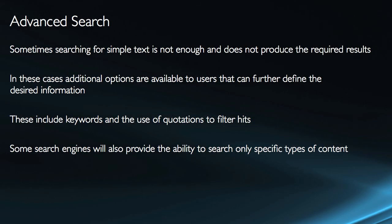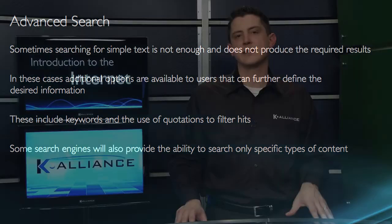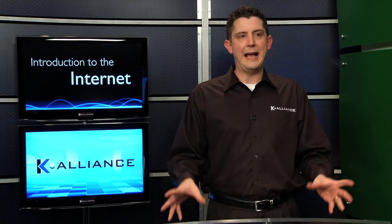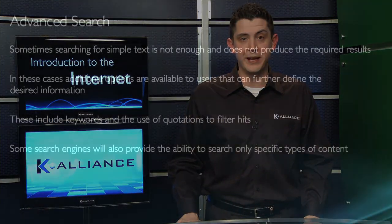Sometimes when we're searching the internet, searching for simple text is just not enough and it doesn't produce the required results. For this reason, I need to know some tips and tricks on how to refine the results. When you do a Google search for some common phrase, even a less common phrase, you can end up with hundreds of thousands of hits. How am I to narrow down my results and pinpoint the information that I want to see?